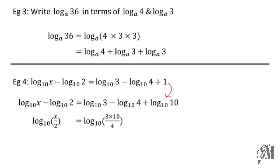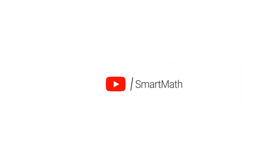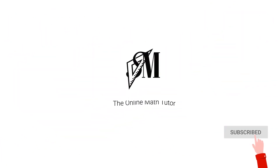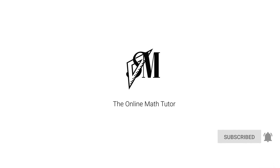Since the log bases are the same, we can equate the values: x/2 = (3 × 10)/4. Simplifying, we cancel 2 and 4 to get a 2 in the denominator, and 2 and 10 to get 5, so x = 3 × 5, giving x equal to 15. This is how you use the laws of logarithms to simplify such questions. See you with another Smart Math tip — until then, goodbye.